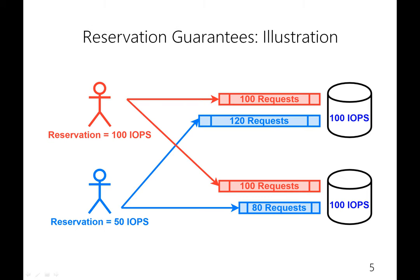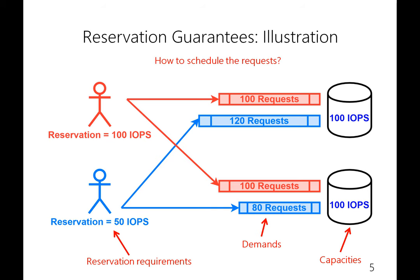Let me give an example of reservation guarantees in a distributed system including two servers and two clients. Each server has a certain service capacity — in this figure, both servers can serve 100 IOs per second. The clients are sending a certain number of requests on each server, known as the demand. The clients specify their reservation requirements, which is the minimum number of IOs the client should receive from all servers every second. Here the red client wants at least 100 IOs per second, and the blue client wants at least 50 IOs per second. The problem is how to schedule requests such that both clients meet their reservation requirements.